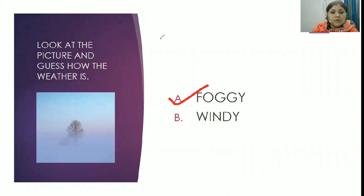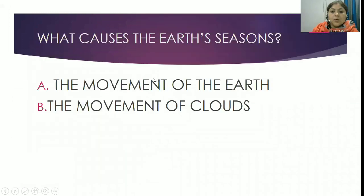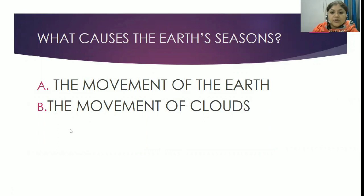Next question. What causes the earth's seasons? Option A: the movement of the earth. Option B: the movement of clouds. The correct answer is Option A — the movement of the earth.